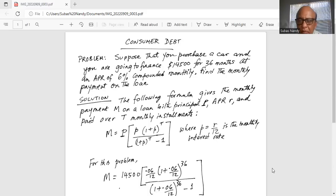The following formula gives the monthly payment M on a loan with principal P, APR R, which is annual percentage rate, and paid over T monthly installments.